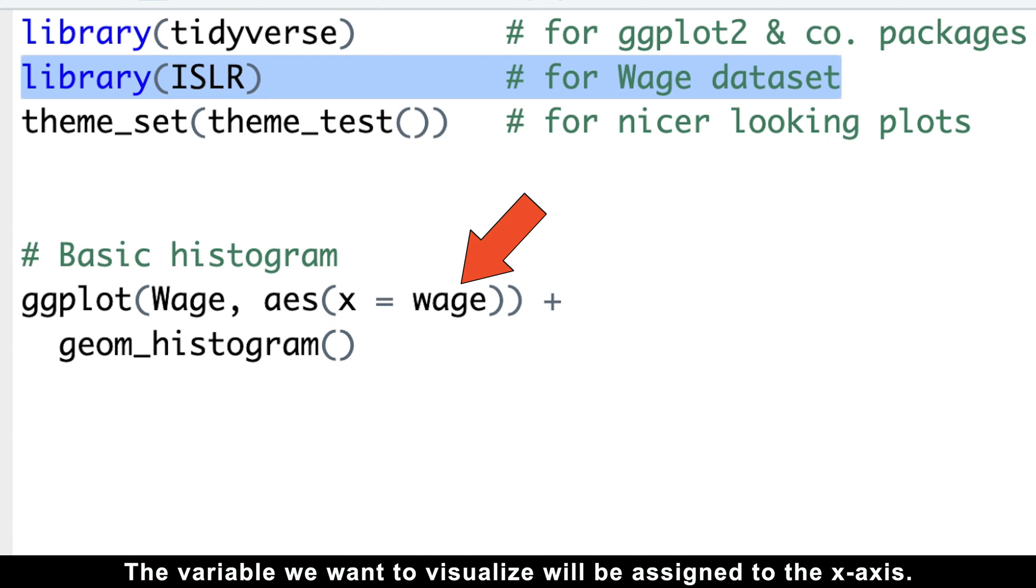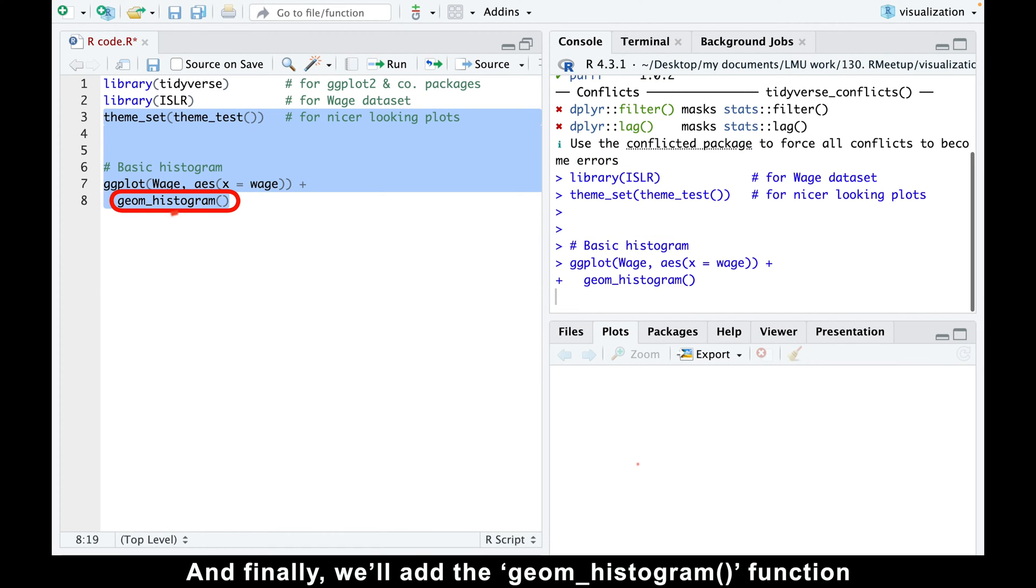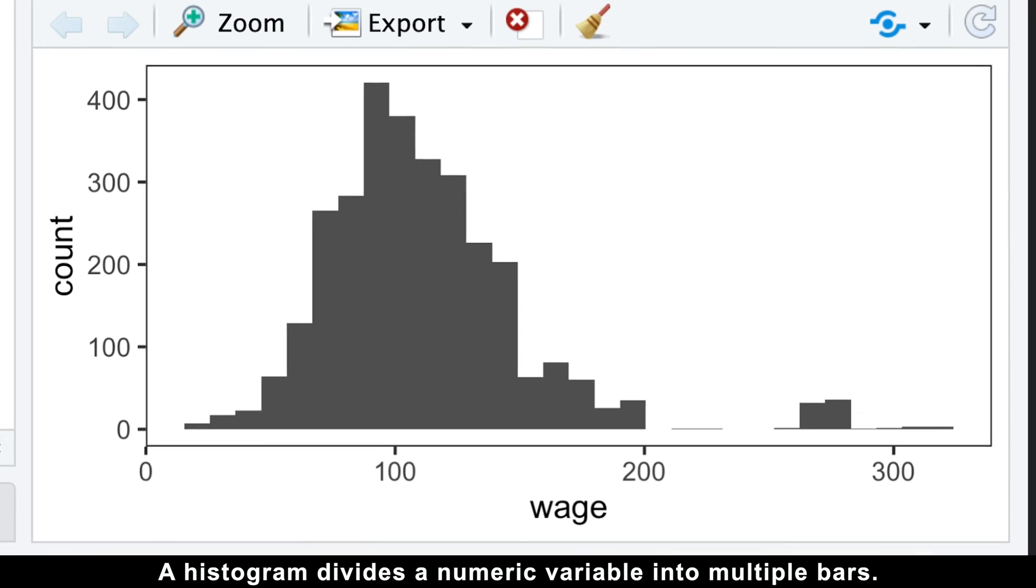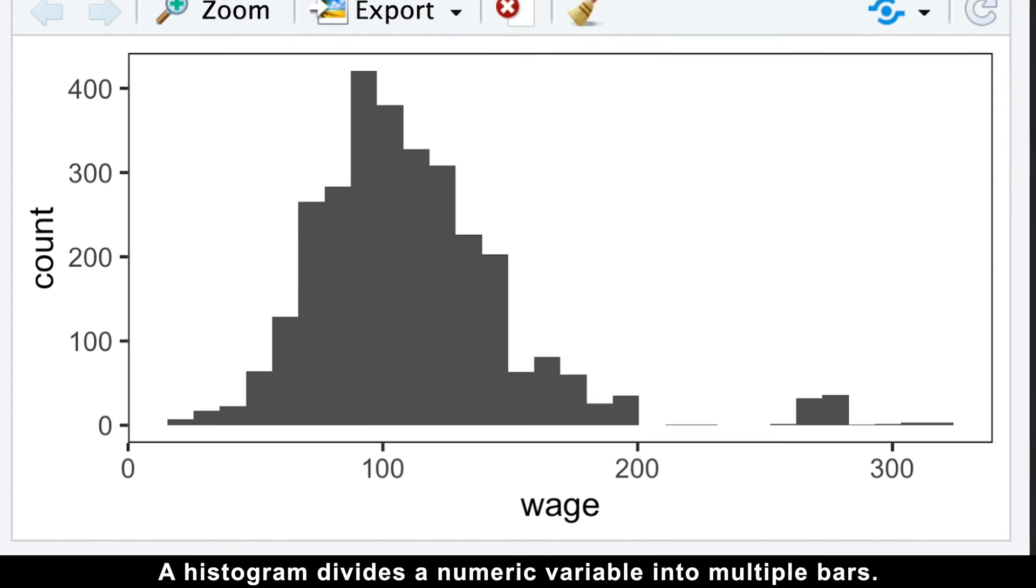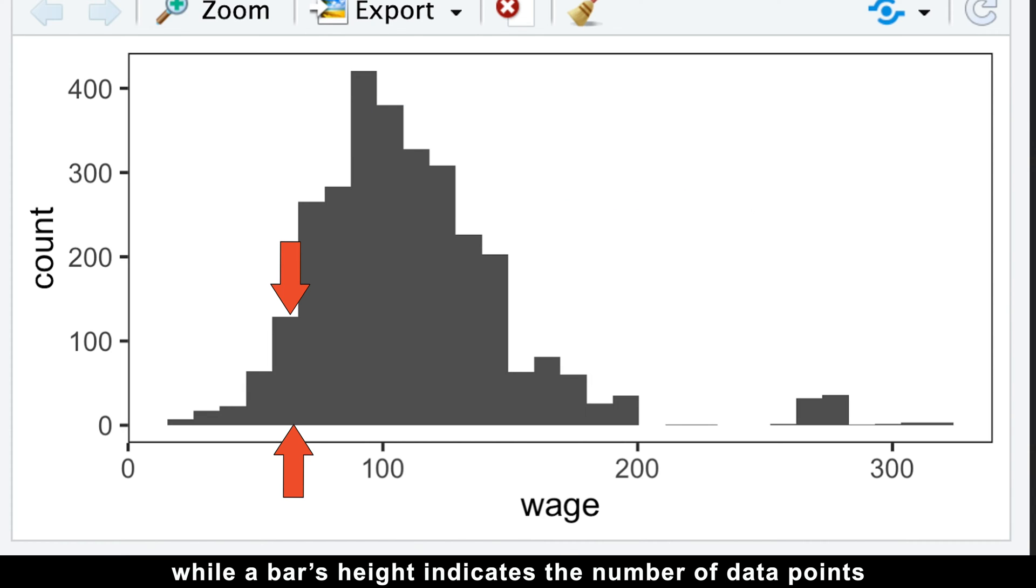The variable we want to visualize will be assigned to the x-axis. Finally, we'll add the geom_histogram function to get the histogram itself. A histogram divides a numeric variable into multiple bars. The width of every bar covers a range of numeric values called a bin, while a bar's height indicates the number of data points within the corresponding bin.